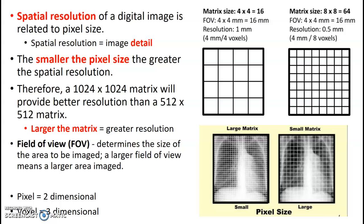Field of view — how big of a view is being imaged, how wide open do you have your cones? Did you collimate? Collimation is automatically going to increase your image quality. There are two terms here: pixel and voxel. Voxel is three-dimensional; pixel is two-dimensional.